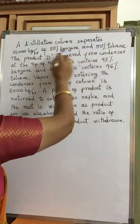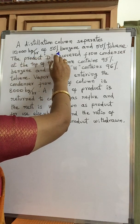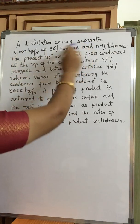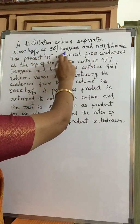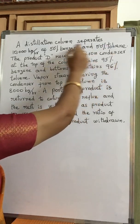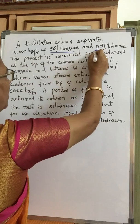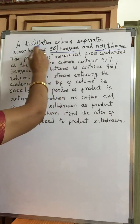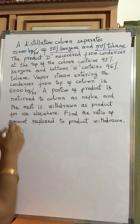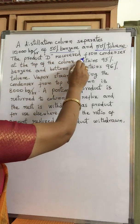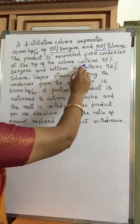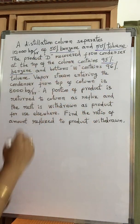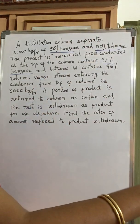A distillation column separates 10,000 kg per hour of 50% benzene and 50% toluene — this is the feed solution. The composition of the feed is 50% benzene and 50% toluene, entering the column at 10,000 kg per hour. The product recovered from the condenser at the top of the column contains 95% benzene — that is, the top product contains 95% benzene.